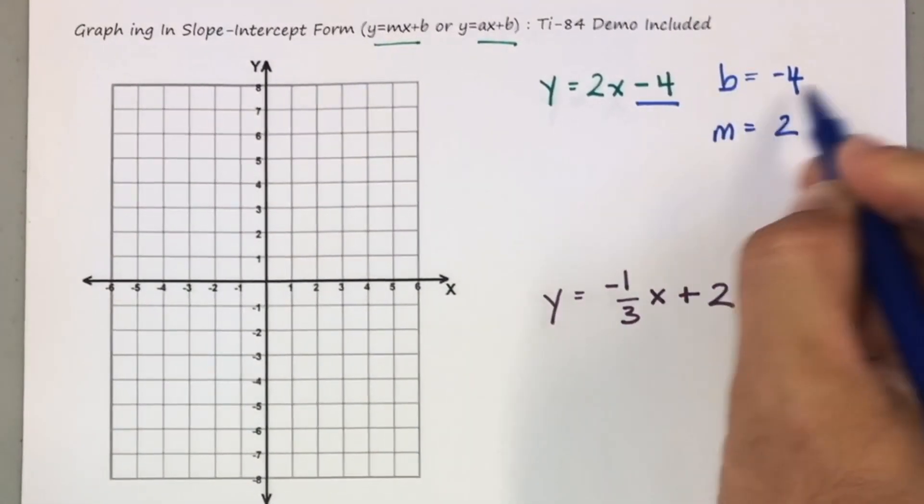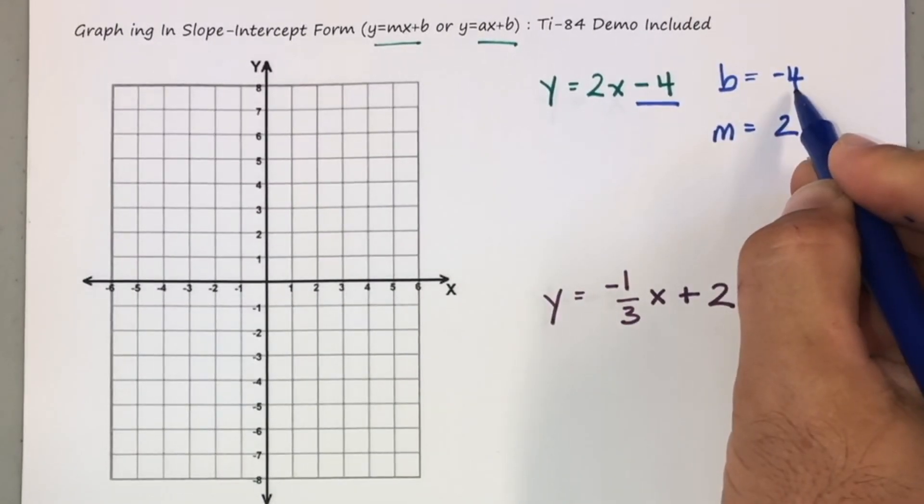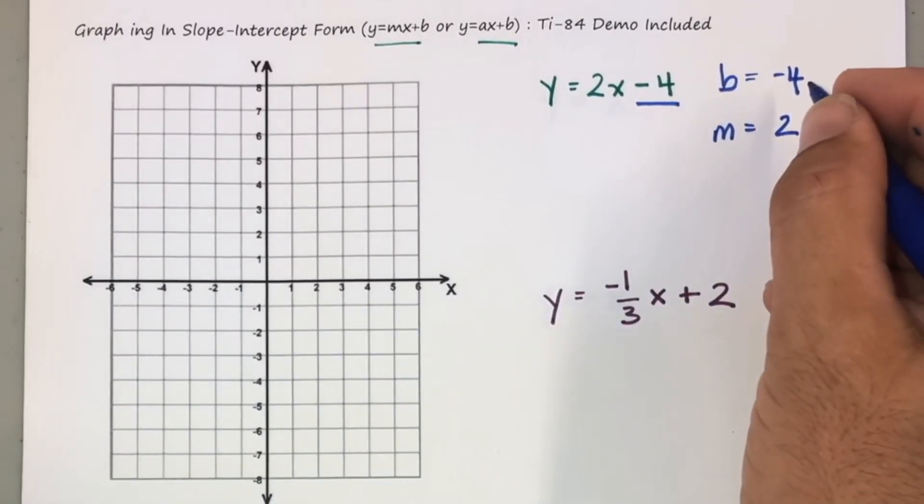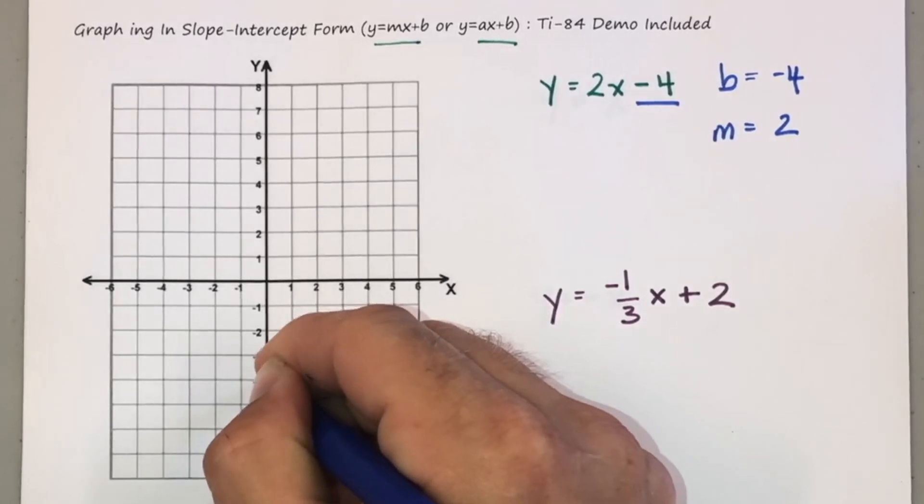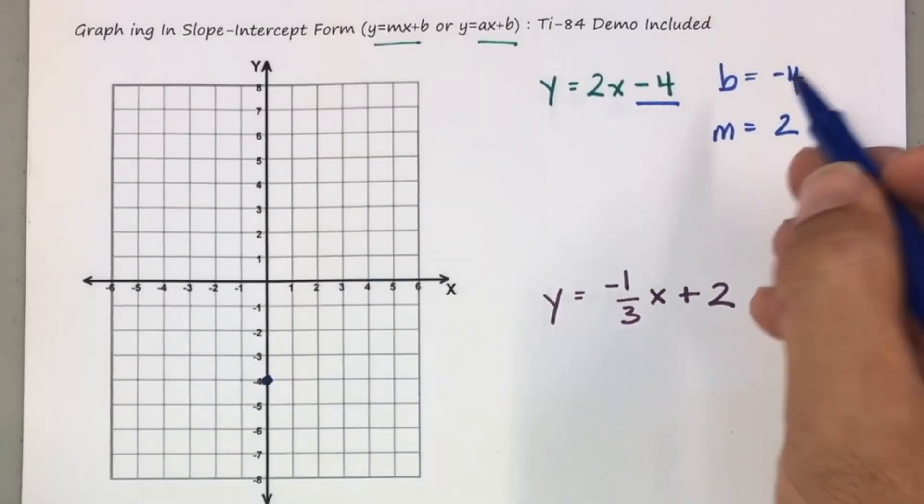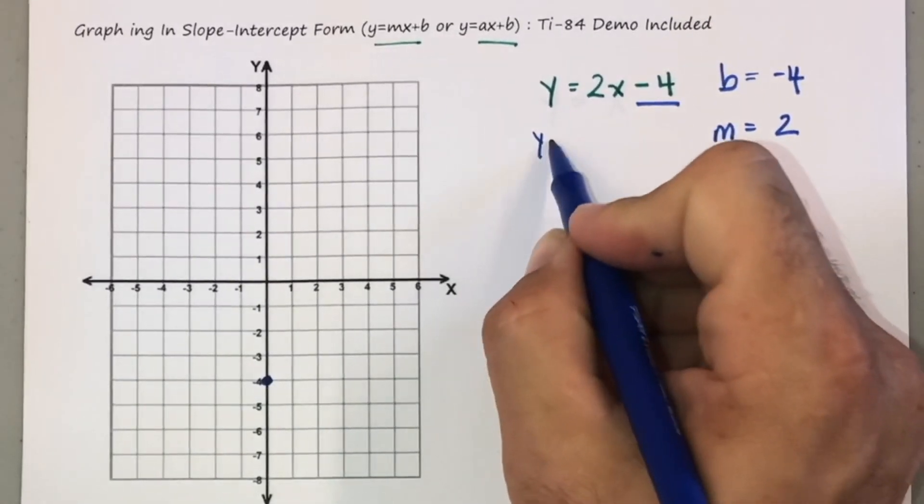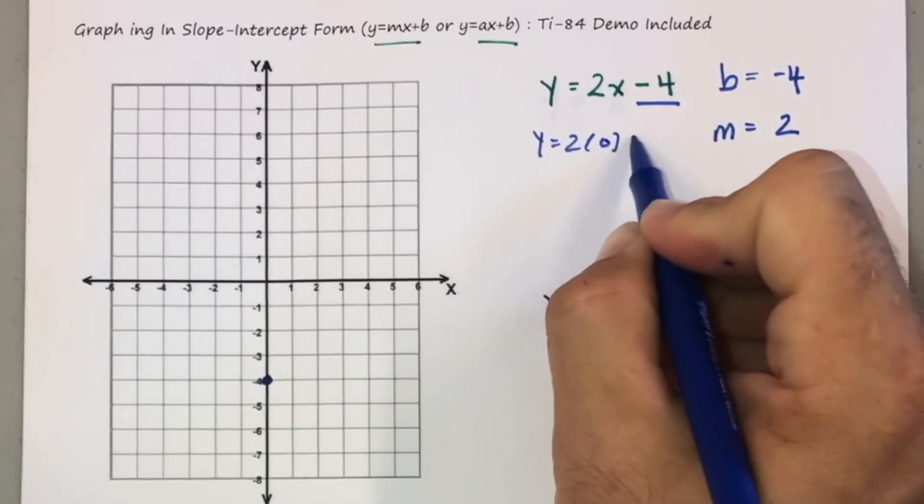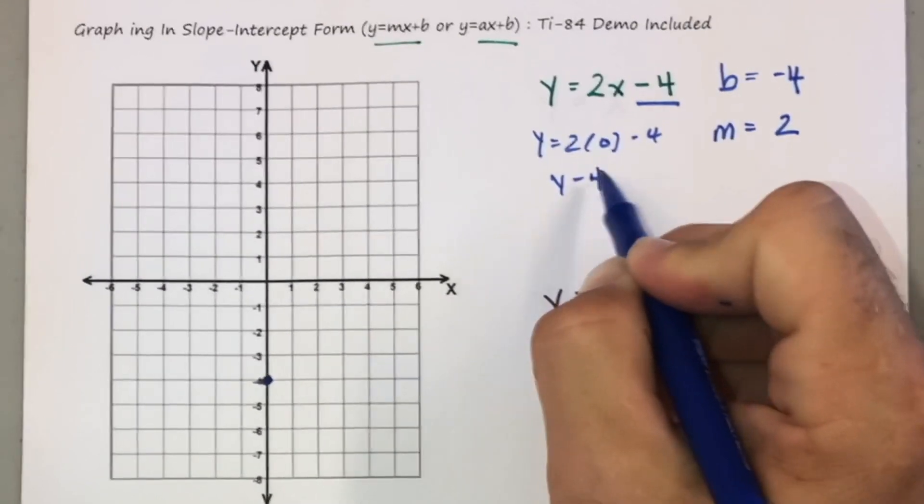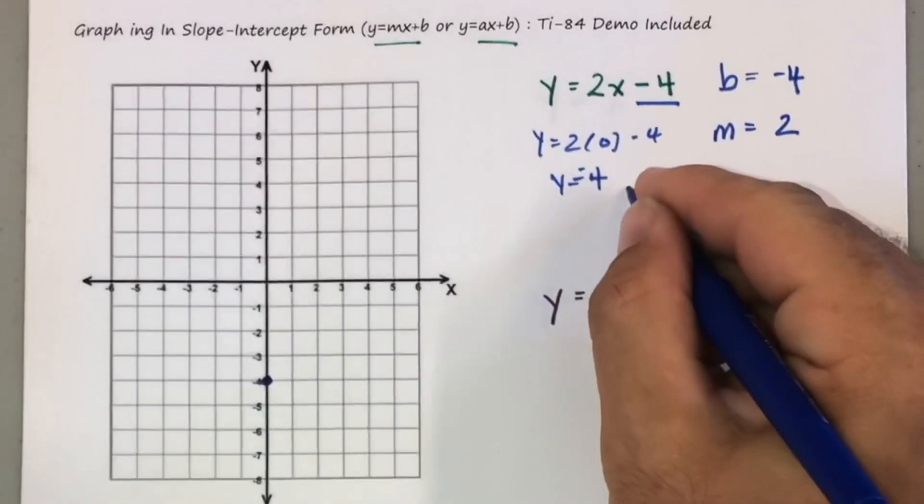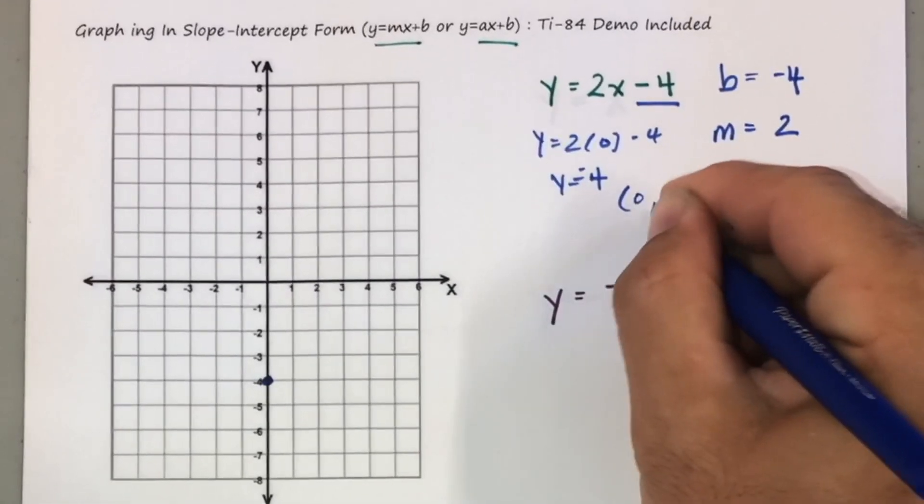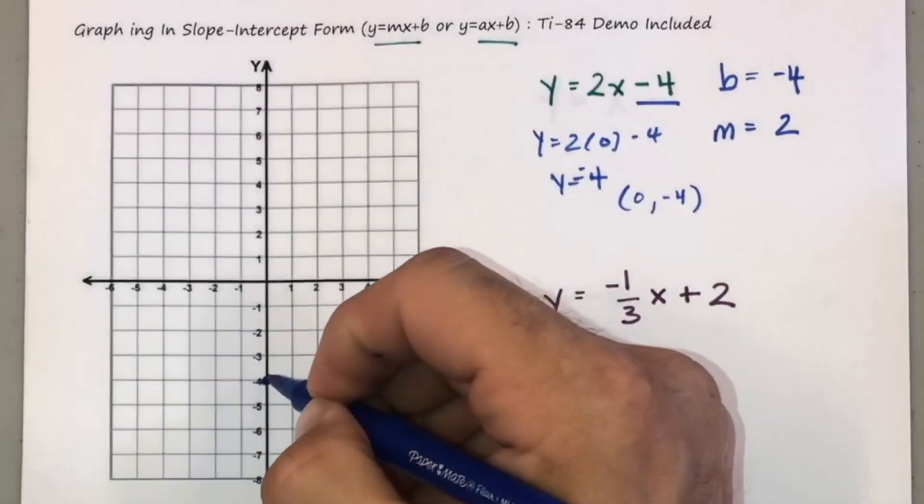Now what this tells me, this b, this y-intercept, tells me basically where the line is going to intersect the y-axis. Basically, if I put in a zero for x, what is my y? y is equal to negative four, which gives me a coordinate of zero, negative four, so I can plot that point here.